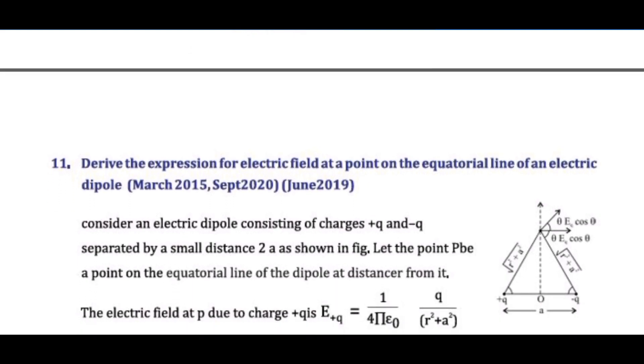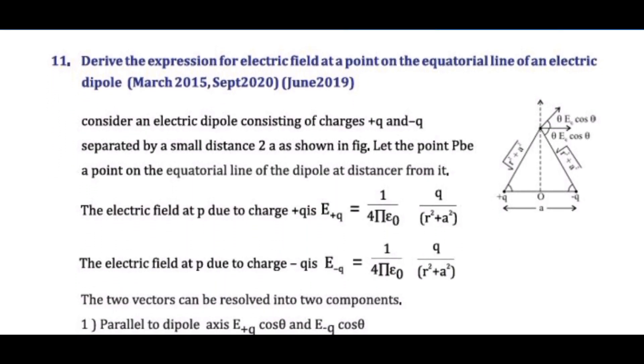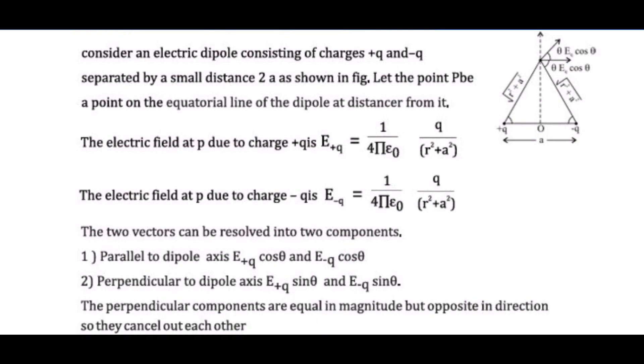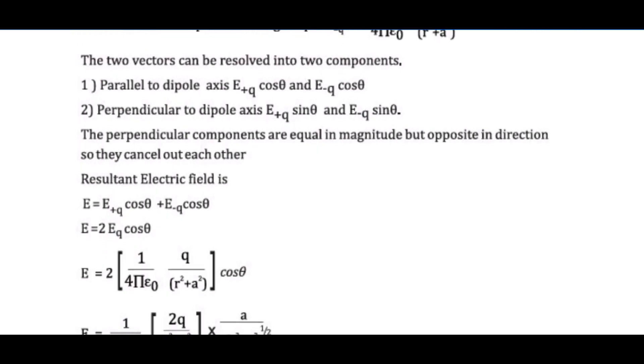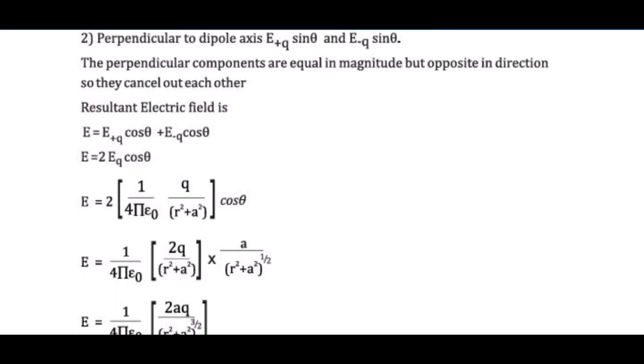Question 11: Derive the expression for electric field at a point on the equatorial line of an electric dipole. To be derived using formula and steps. E equals 1 over 4 pi epsilon 0 times P over R cubed for equatorial line, direction opposite to P.